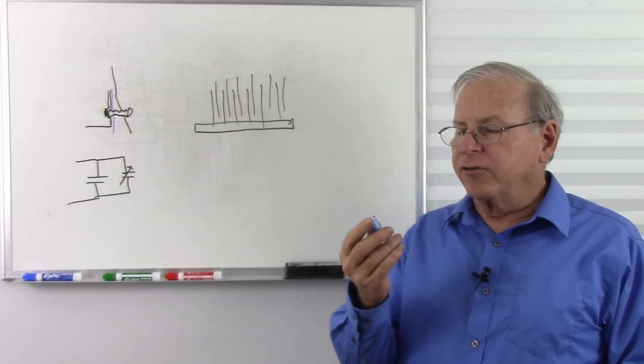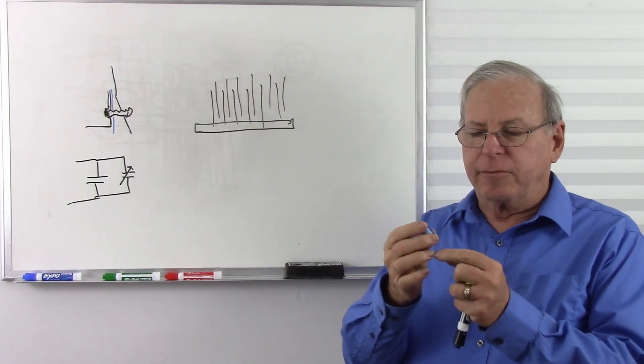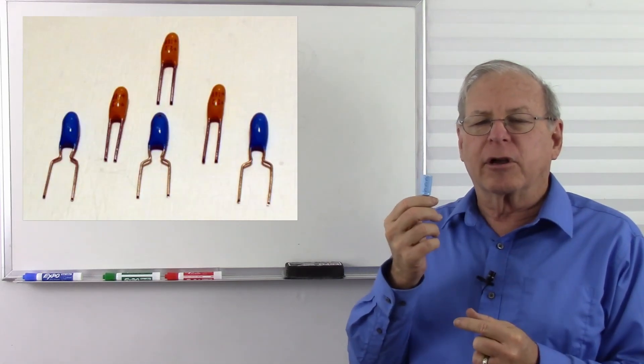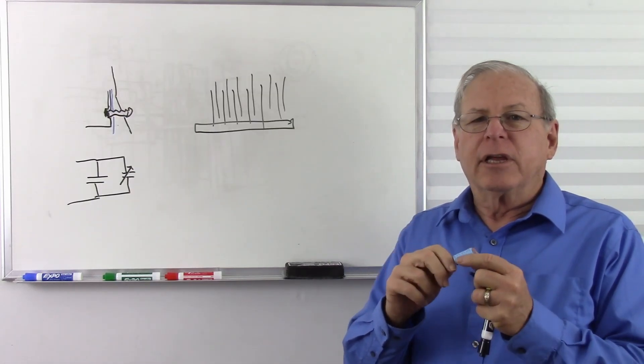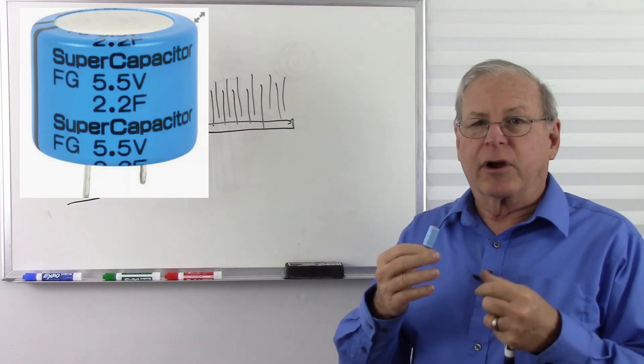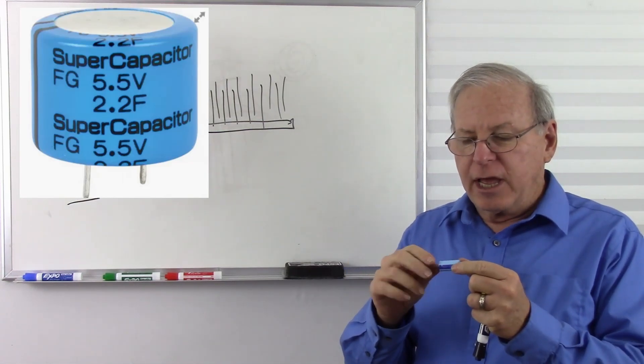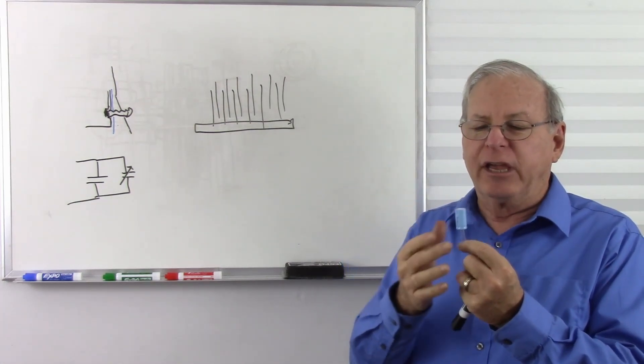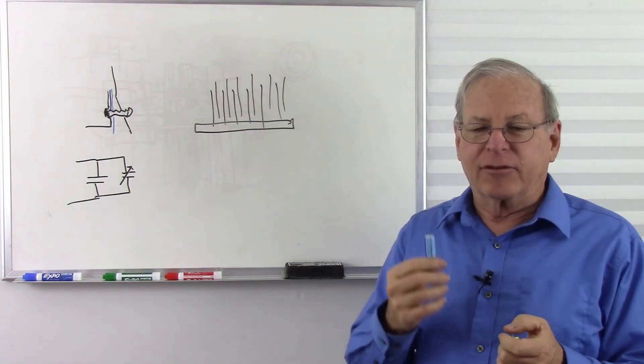So any capacitor that uses that effect of electrolyte, which could be this kind of electrolytic capacitor, or a tantalum capacitor, or your solid polymer capacitors, and your electric double layer capacitors, which are often called supercapacitors, will have to be polarized because of the way they're made. If you reverse the polarity, it breaks down the insulation, and bad things can happen.